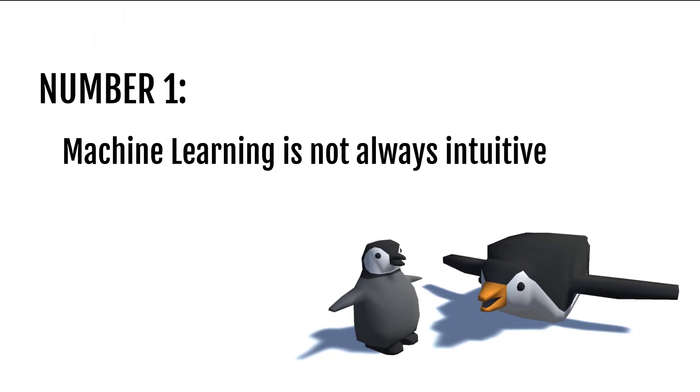Number one: machine learning is not always intuitive. At times it seems like you have it figured out. Something clicks and you're like, I get it. This machine learning thing — all it is is some inputs and some outputs, you train it for a little while and it just works. I tend to fall into that trap as well. I feel like I've got it all figured out, and then it doesn't work at all. Even the simplest problem doesn't seem to work the way you expect it to. And that is exactly what happened with my penguins.